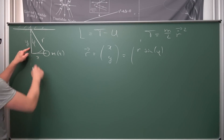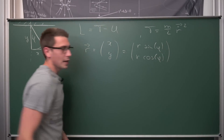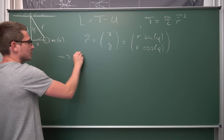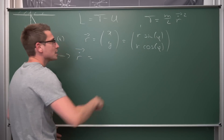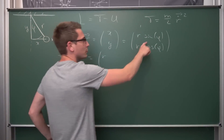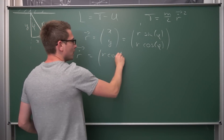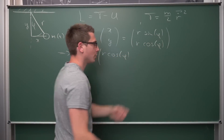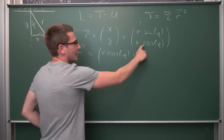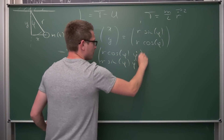Same thing with the y coordinate: cosine of alpha equals y over r, so y equals r times cosine of alpha. Our variable alpha is with respect to t, so if we differentiate our vector r, we take the time derivative component-wise. For x: r is not time-dependent, so we bring it to the front and differentiate sine of alpha with respect to time using the chain rule, giving us r times cosine of alpha times alpha dot. For y: the derivative of cosine gives us negative sine of alpha times alpha dot, so the y component is negative r times sine of alpha times alpha dot.